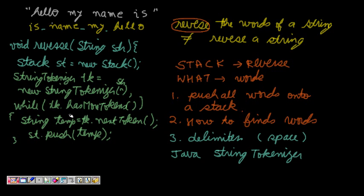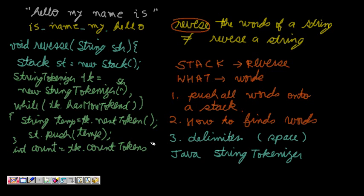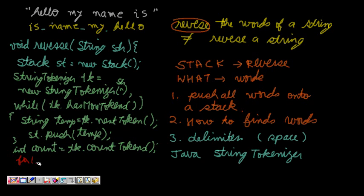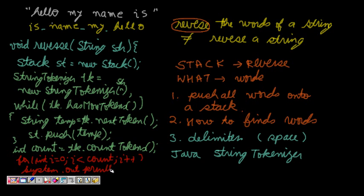For popping, we find the count of tokens: int count = tk.countTokens(). Then we loop: for (int i = 0; i < count; i++) and do System.out.println(st.pop()). This will pop the tokens for us and we can read all the words in reverse order.